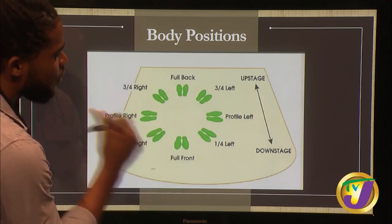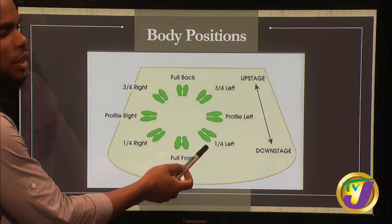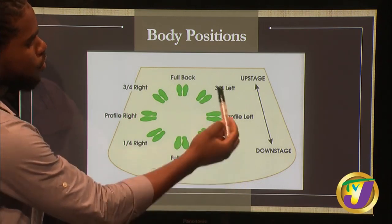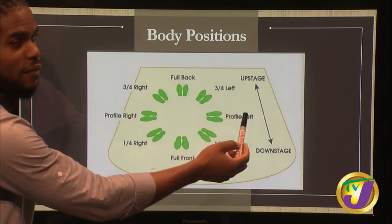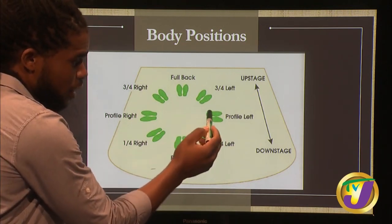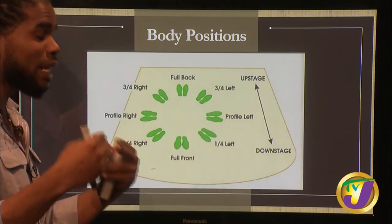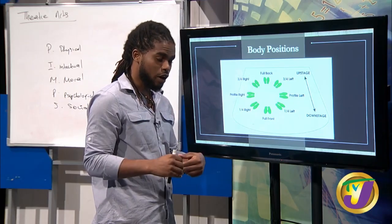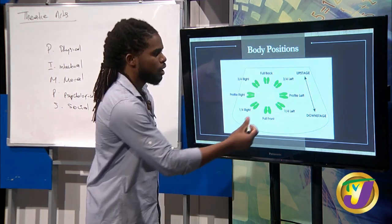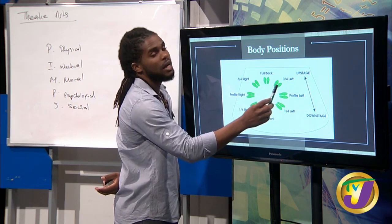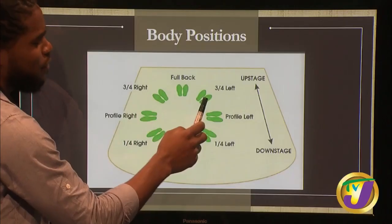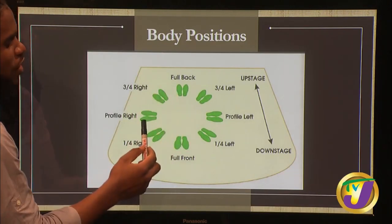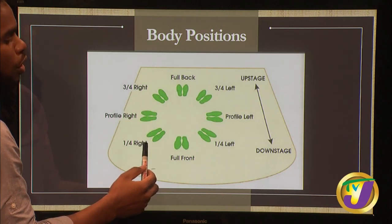Then to the left we have semi-profile left, also represented as quarter profile left. Just above that is profile left. Remember, you read the body profiles from the perspective of the performer, the same as with stage positions. Then we have three-quarter profile left. Going back to full back, then three-quarter profile right, profile right, and semi-profile right or quarter profile right.